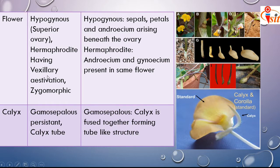Vexillary aestivation means the flower has 5 petals: the outermost large petal is the standard. Inside it are 2 petals called wings, and inside the wings are 2 keels which are fused, enclosing the androecium and gynoecium. The arrangement of these 5 petals in the leguminous family is called vexillary aestivation.